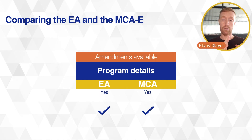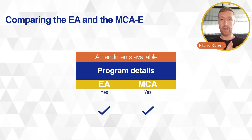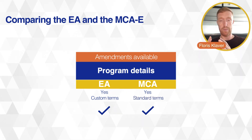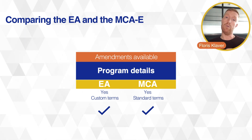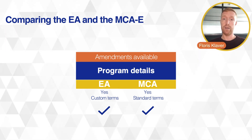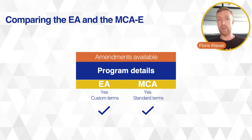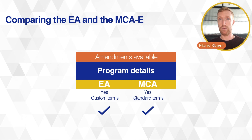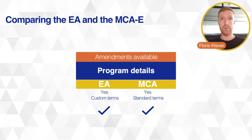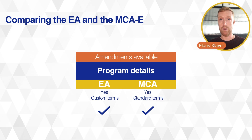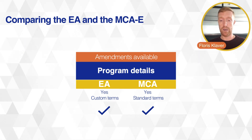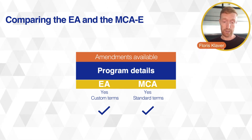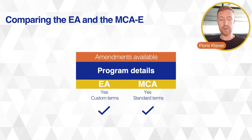Amendments are available in both agreements, but the Enterprise Agreement is still the contract where you can get custom terms. In the MCAE it's mainly standardized amendments so far — there is not a lot of customization potential yet. If you're a very large organization relying heavily on customized terms — such as flexible contract periods or the option to scale up and down on a shorter or longer basis than one year — that doesn't fit in the MCAE.